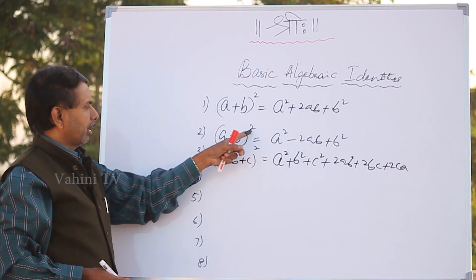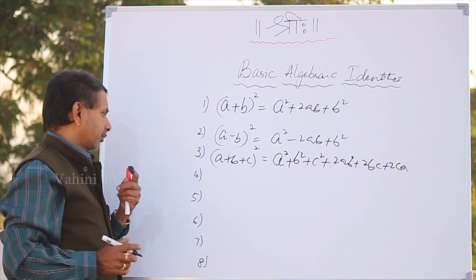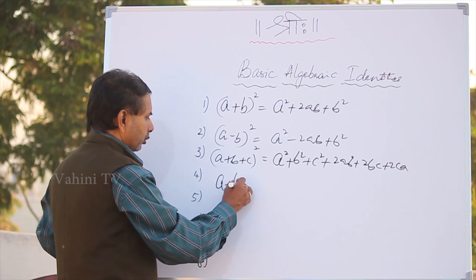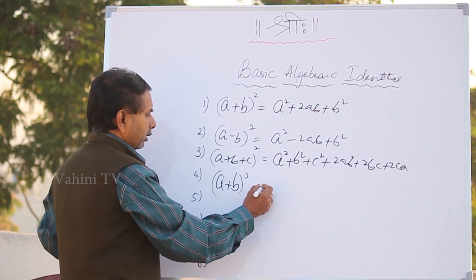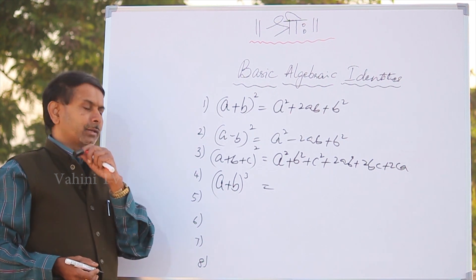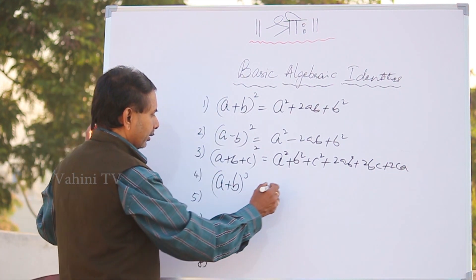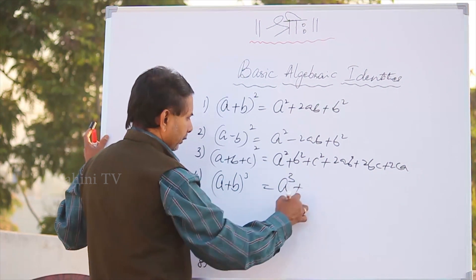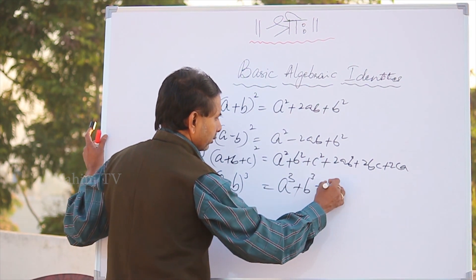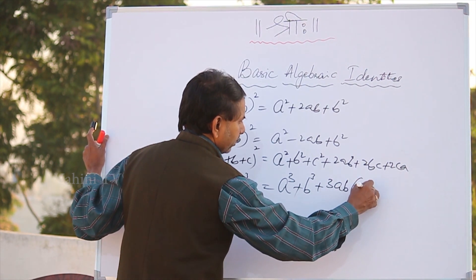This is called two-dimensional and three-dimensional methods here. What is known as a plus b whole cube? Remember: a plus b whole cube equals a cubed plus 3ab into a plus b.